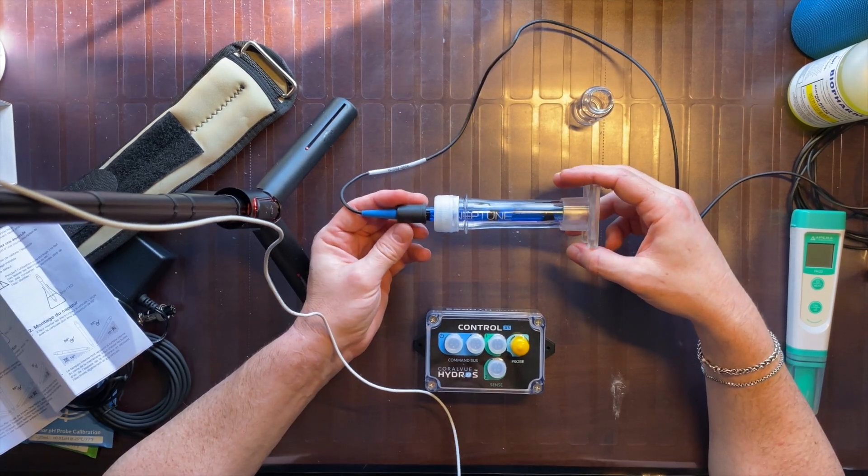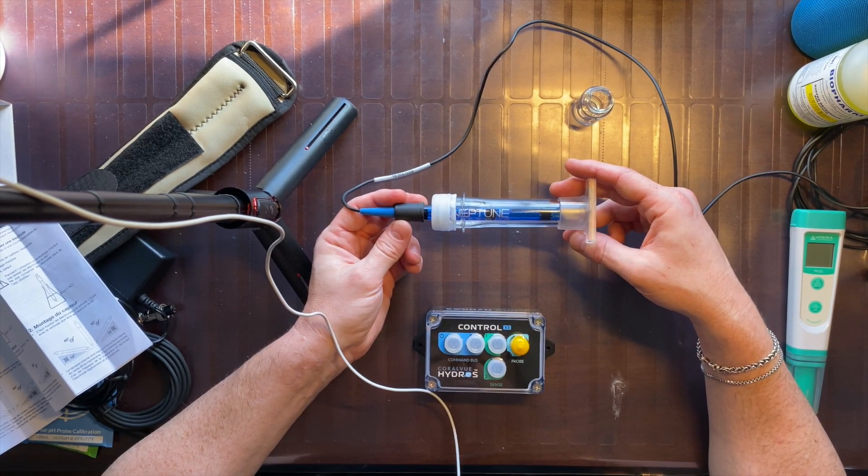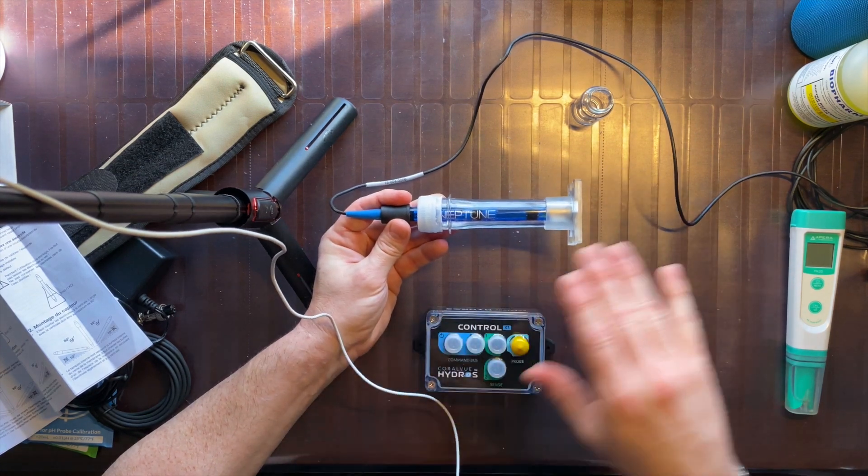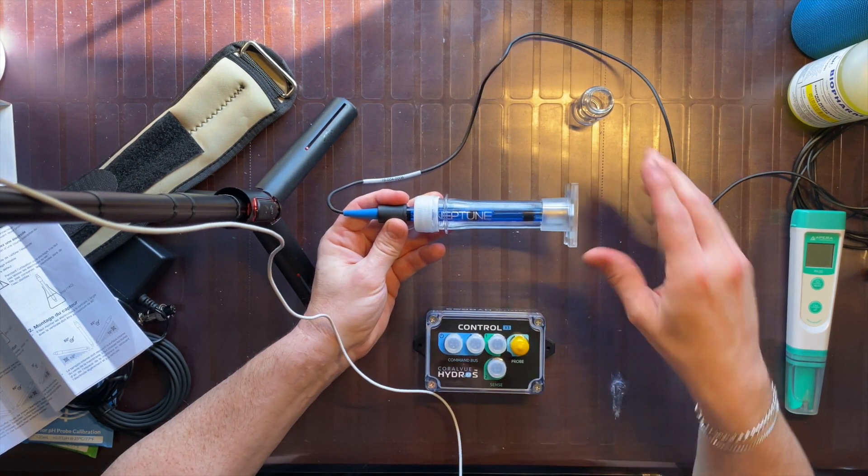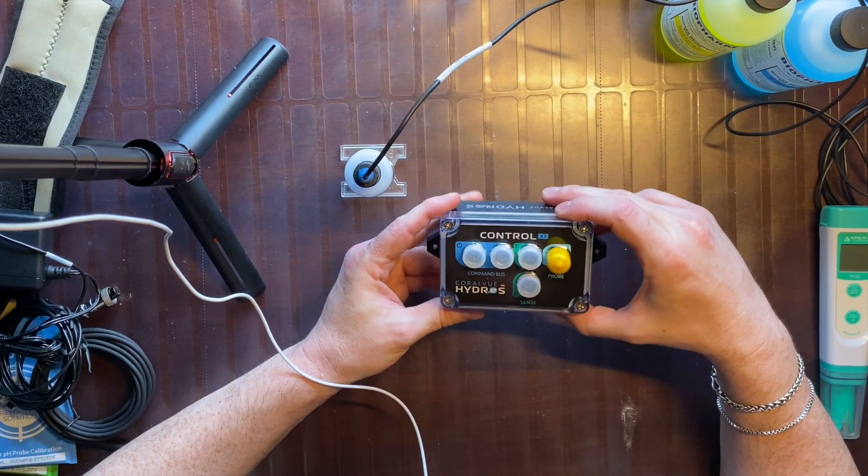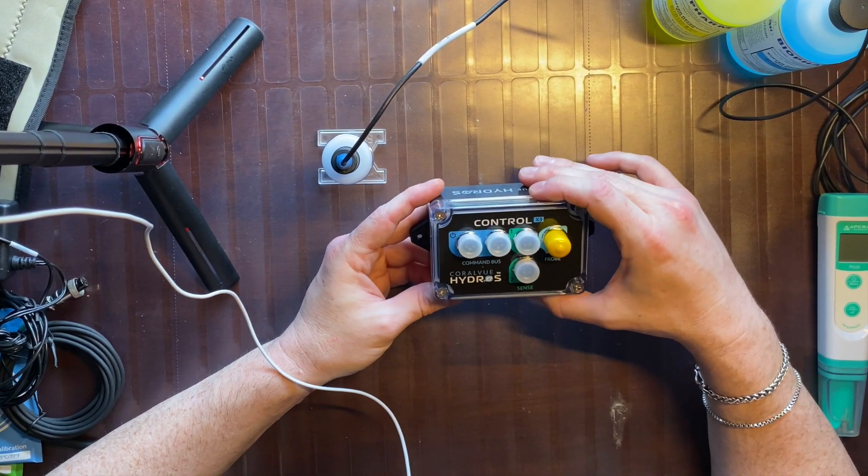I finally became convinced that there might be something going on with the pH probe when the graphs on my Fusion app started flattening out, whereas prior they were fluctuating up and down. So when I heard about this controller, the X3, I was like, this is the perfect purchase for just that.